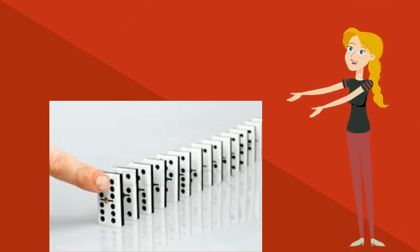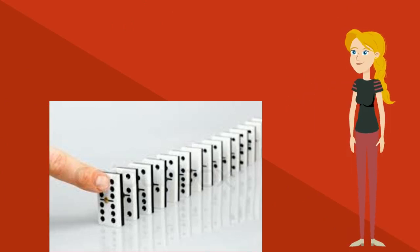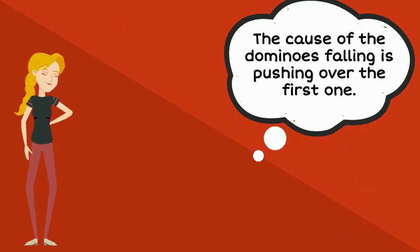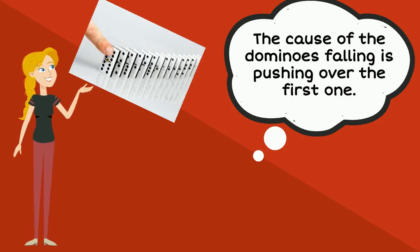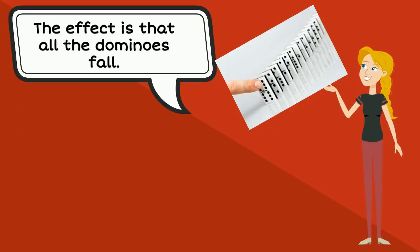Look at this row of dominoes. If you push over the first one, what will happen? That's right, it causes all the dominoes to fall. In this example, we can say the cause of the dominoes falling is pushing over the first one. And we can also say that the effect is that if you push the dominoes, they will all fall.